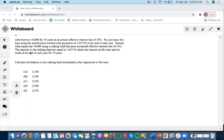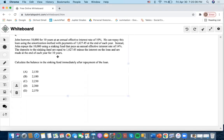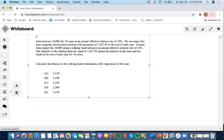So now we're going to go over SOA exam number four, question number four. Let me get my pencil out. It says John borrows $10,000 for 10 years at an annual effective interest rate of 10%. He can repay this loan using the amortization method with payments of $1,627.45 at the end of each year.